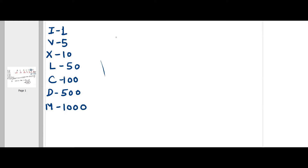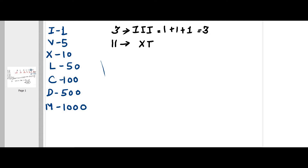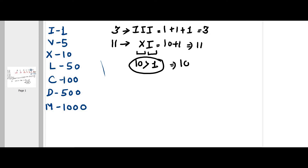For example, if I want to form the number 3: I is 1, so 1 plus 1 plus 1 equals 3 — you write I three times. For 11, that would be X plus I, which is 10 plus 1 equals 11. This works when the first symbol's value is greater than the next one, so you add the values.